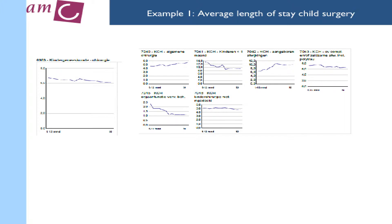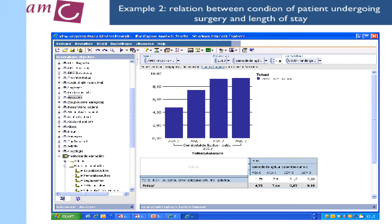We look at the management information system to examine the length of stay of our patients, and we look at that information in combination with information about the condition of the patient — which is relevant especially for people undergoing surgery. That actually enables our head nurses to look at the planning and forecast how many patients are coming in, enabling us to deliver the best care we can in our nursing departments.